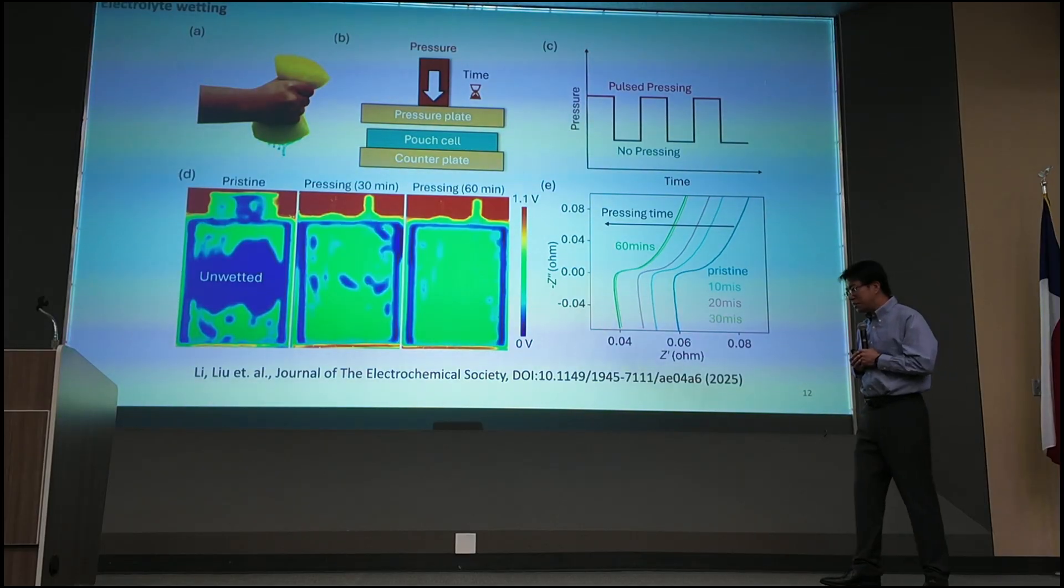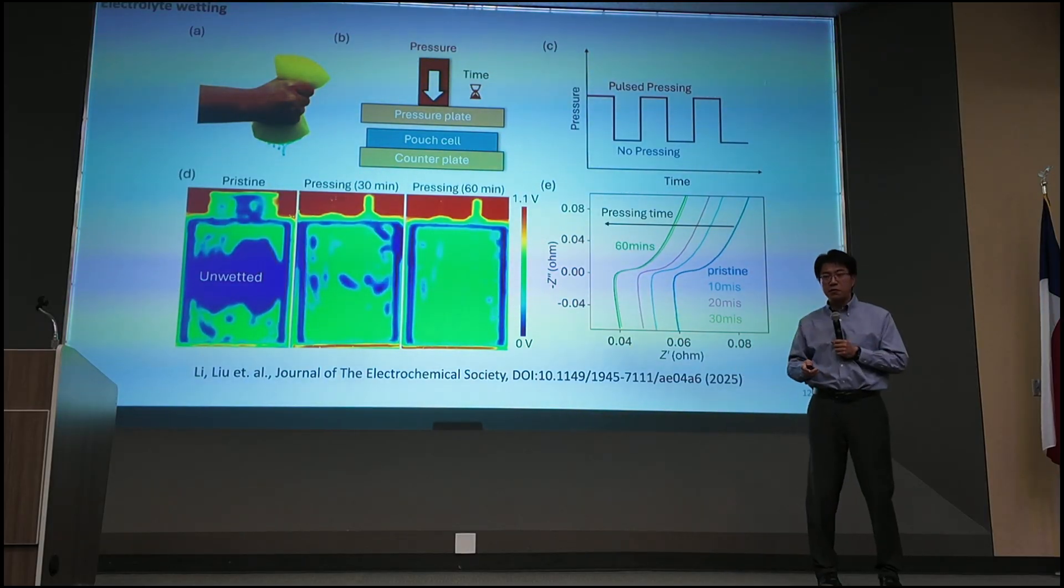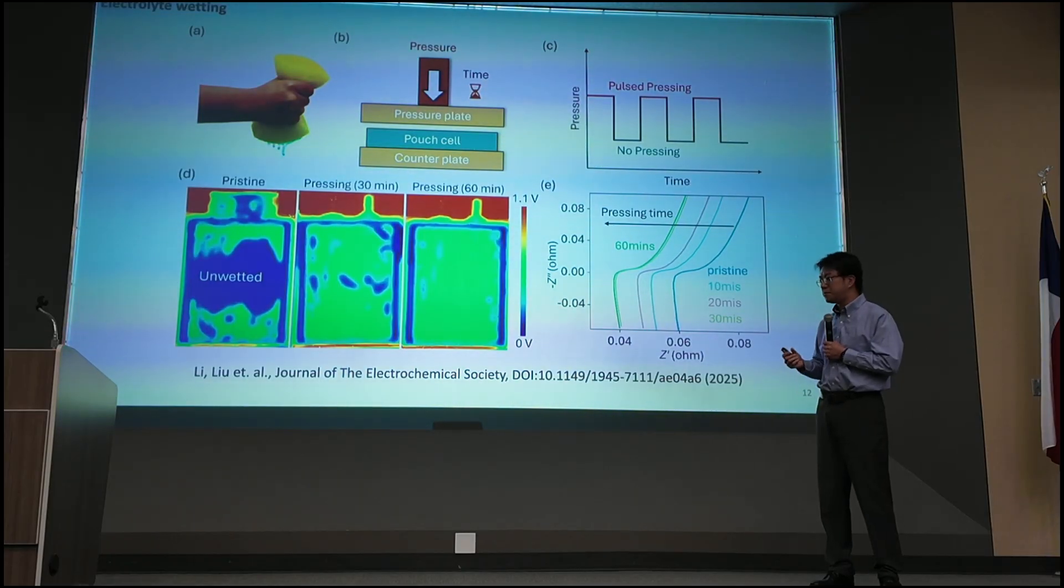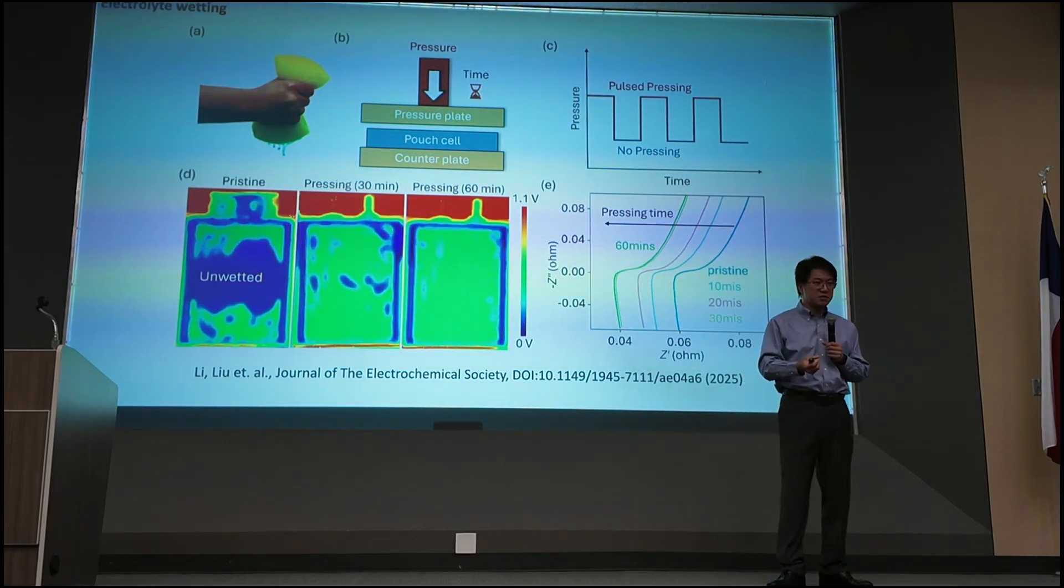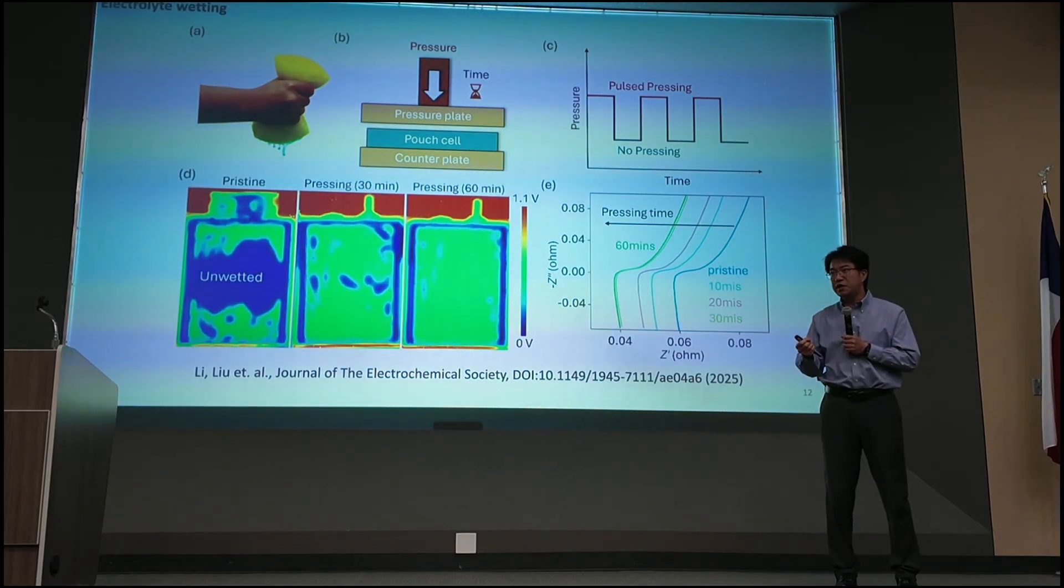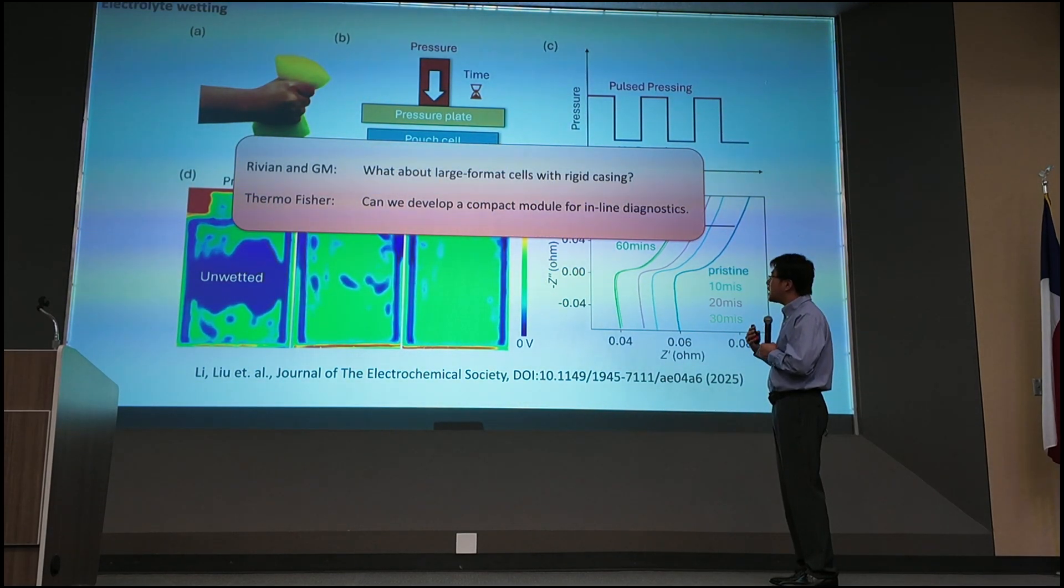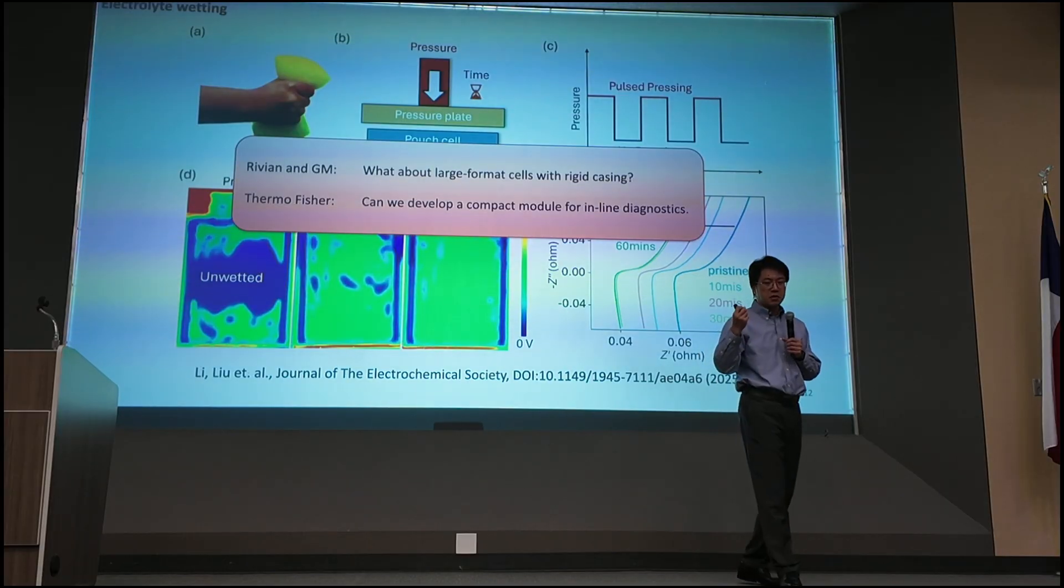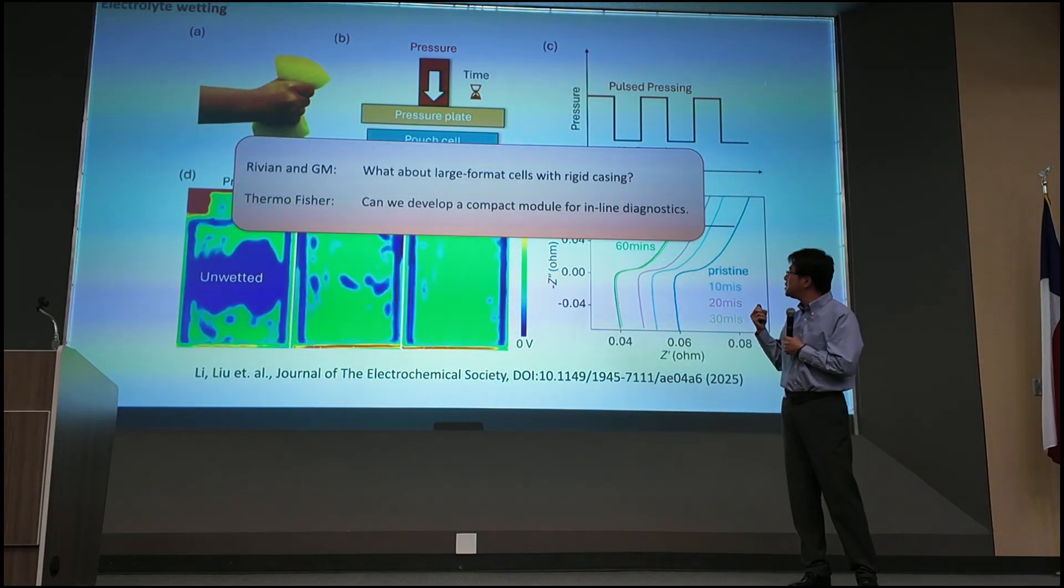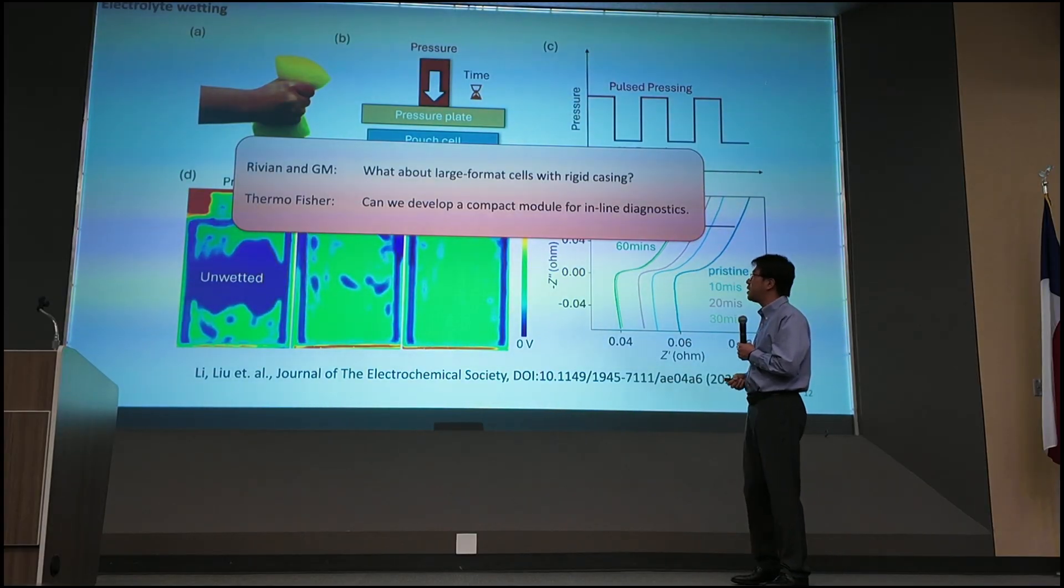When we show this to our industry partners, they said, good job. But this only works for the pouch cell, which has a soft case. For the cells that are utilized in electric vehicles, for example, the cylindrical cells, or even larger cells, it has a hard case. The pressure is not going to work, because when you squeeze on the 18650 cylindrical cell, you are not able to squeeze against the hard case. That's why we keep getting questions, getting feedbacks from the industry. For example, Rivian and GM asked this question instantaneously. And some officials looked at this, they said, can we develop a compact module that can be integrated to really improve the factory pipeline, to really see this in line, to really see this as the cells are being manufactured.